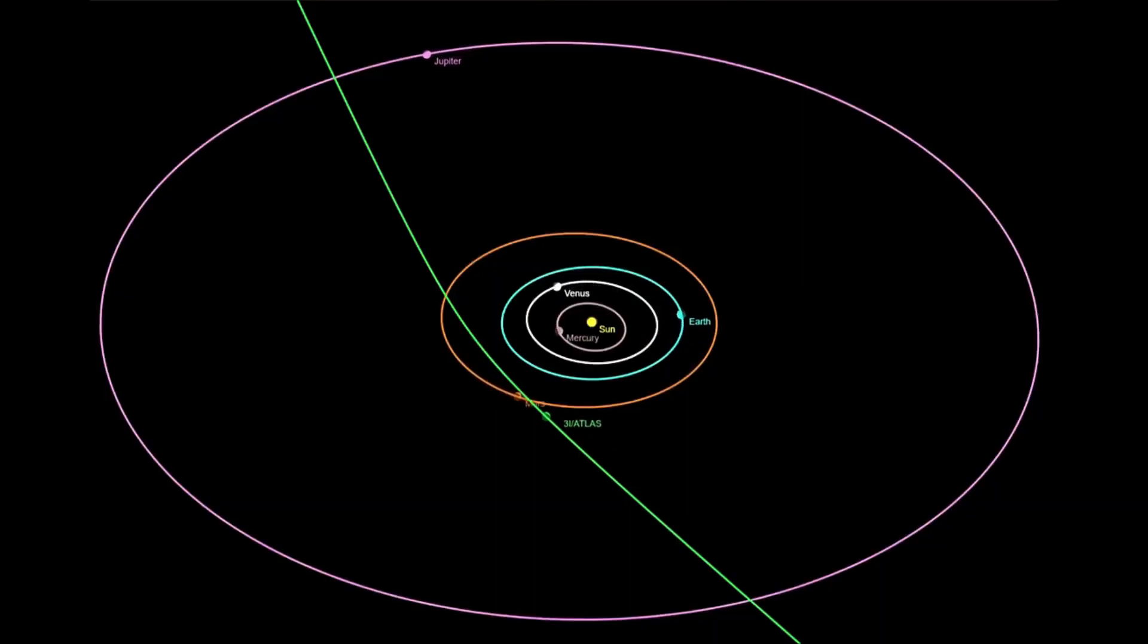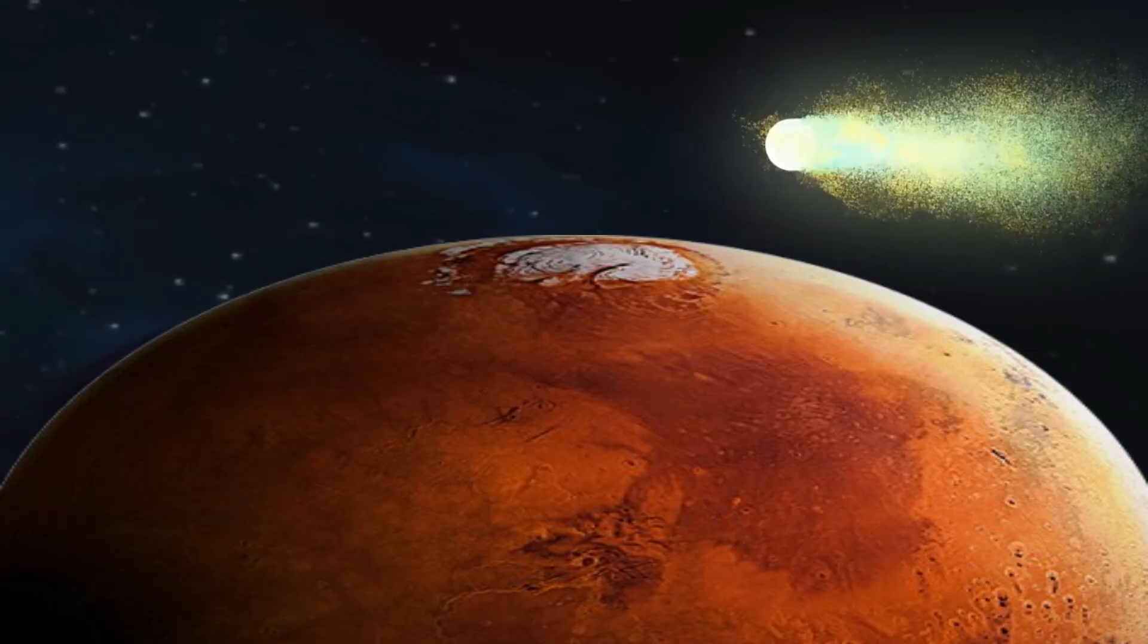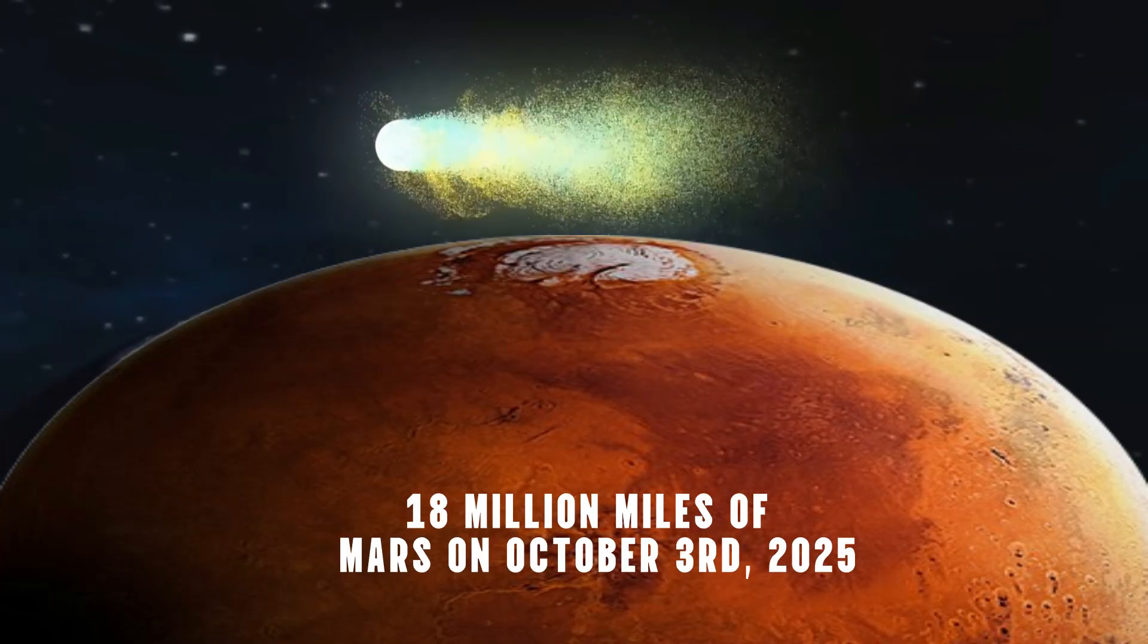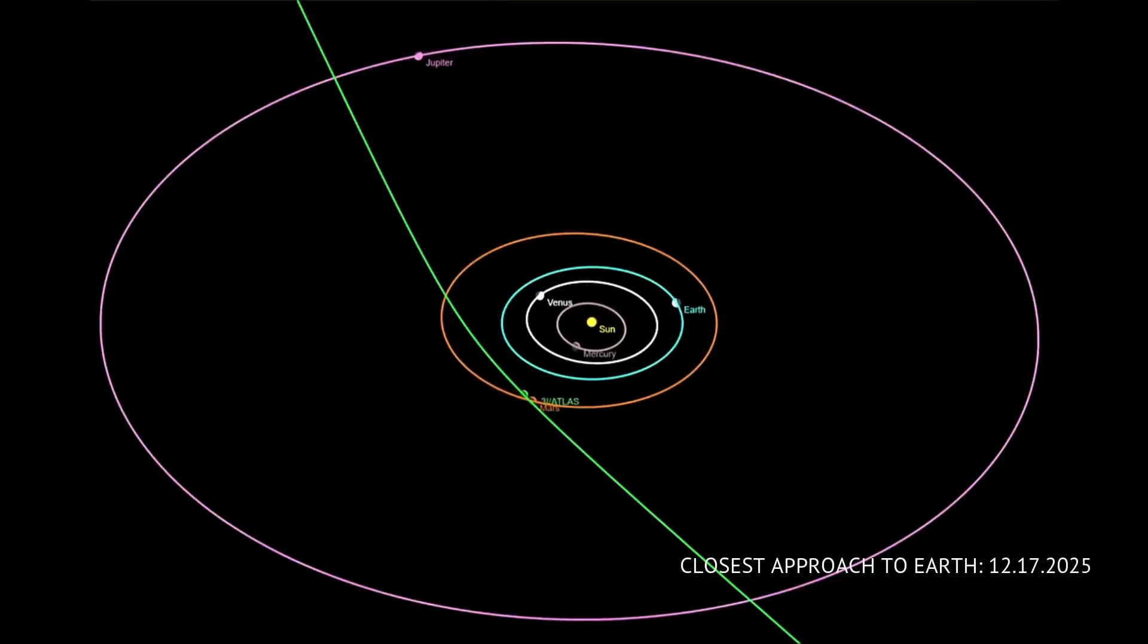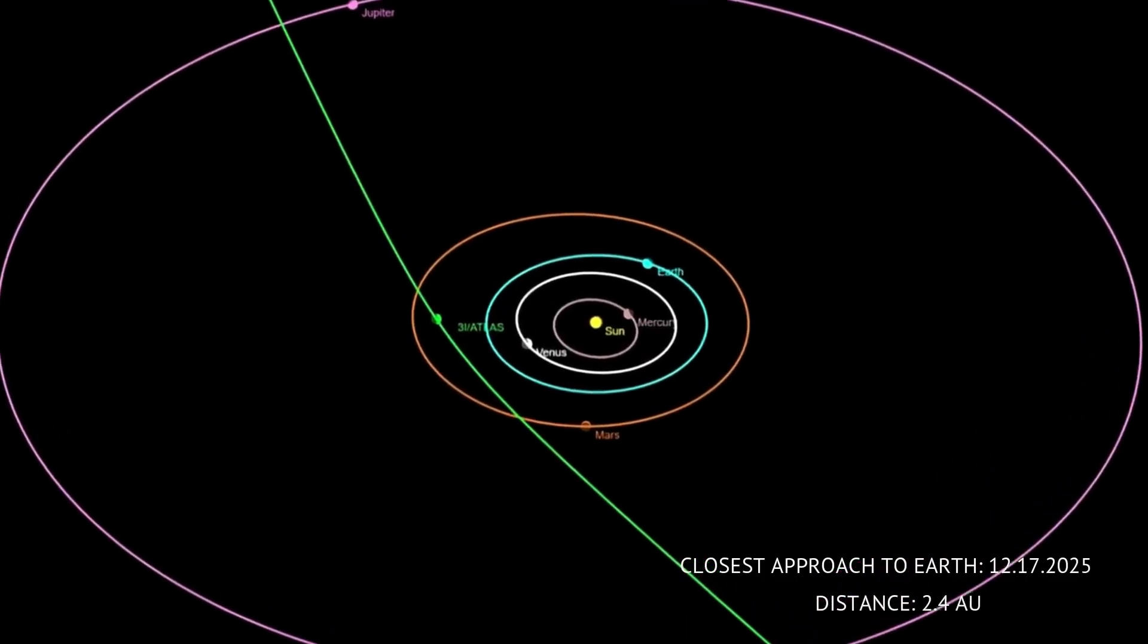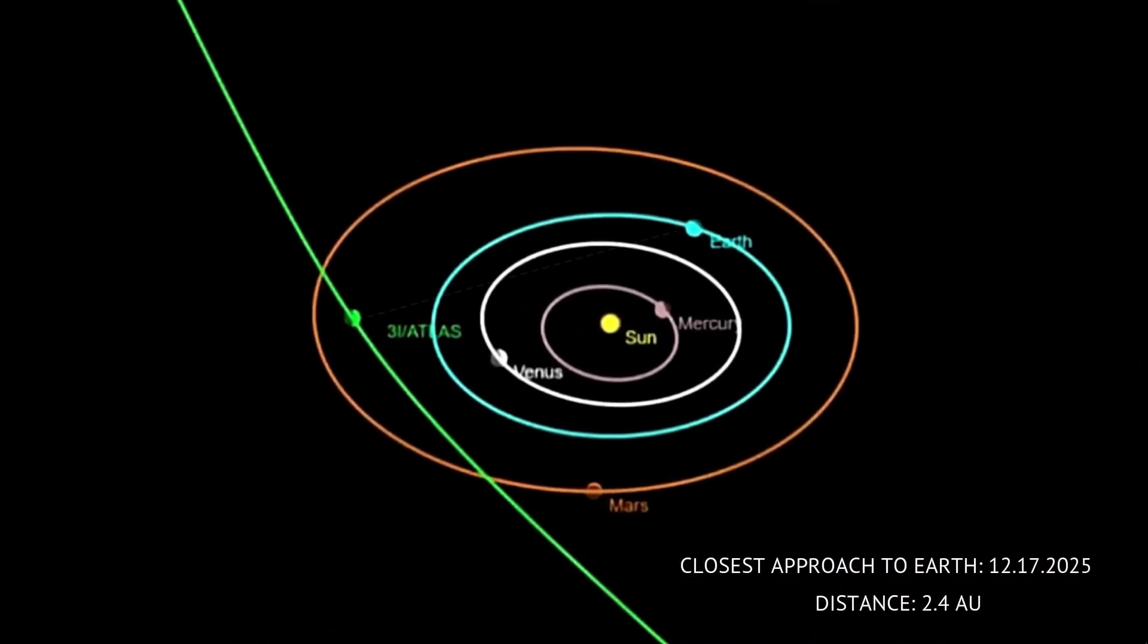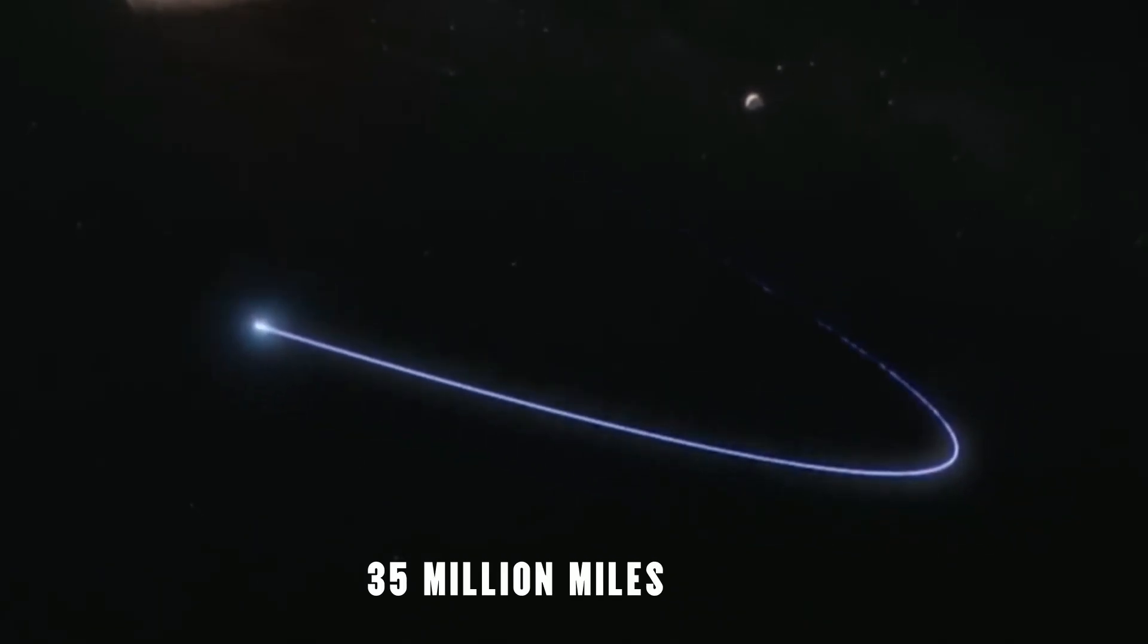But the pattern becomes even more intriguing. This object made remarkably close approaches to multiple planets. It passed within about 18 million miles of Mars on October 3rd, 2025. For comparison, that's closer than Mars ever gets to Earth during its closest approaches, which happen about every 26 months and bring the planets within roughly 35 million miles of each other.